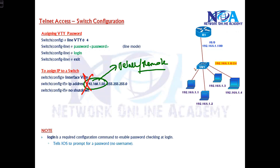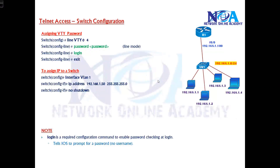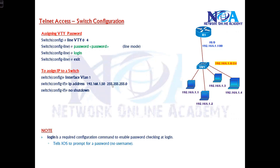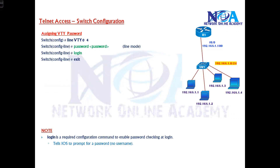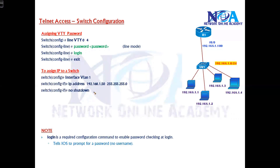Even without an IP address the switch can still be used, because switches are plug and play — even manageable switches can be used without passwords or IPs. But in production scenarios we use remote access because it's not practical to go to the console every time you need to make changes. By sitting at any PC you can simply remotely access the switch via telnet, and for that we need an IP address.